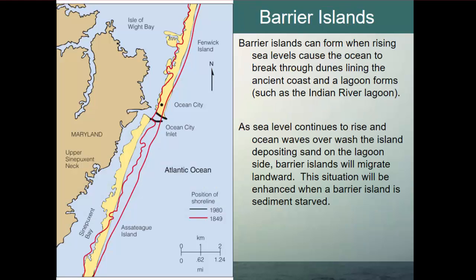In Maryland, Ocean City's barrier island was developed while the island to its south was not. By comparing shoreline positions from 1849 to 1980, the southern undeveloped island had migrated significantly due to natural processes. Barrier islands can also form when rising sea levels cause the ocean to break through dunes along ancient coasts, forming lagoons like the Indian River Lagoon. As sea level rises and ocean waters wash over the island depositing sand in the lagoon, barrier islands tend to migrate landward — especially if sediment-starved by structures like jetties.